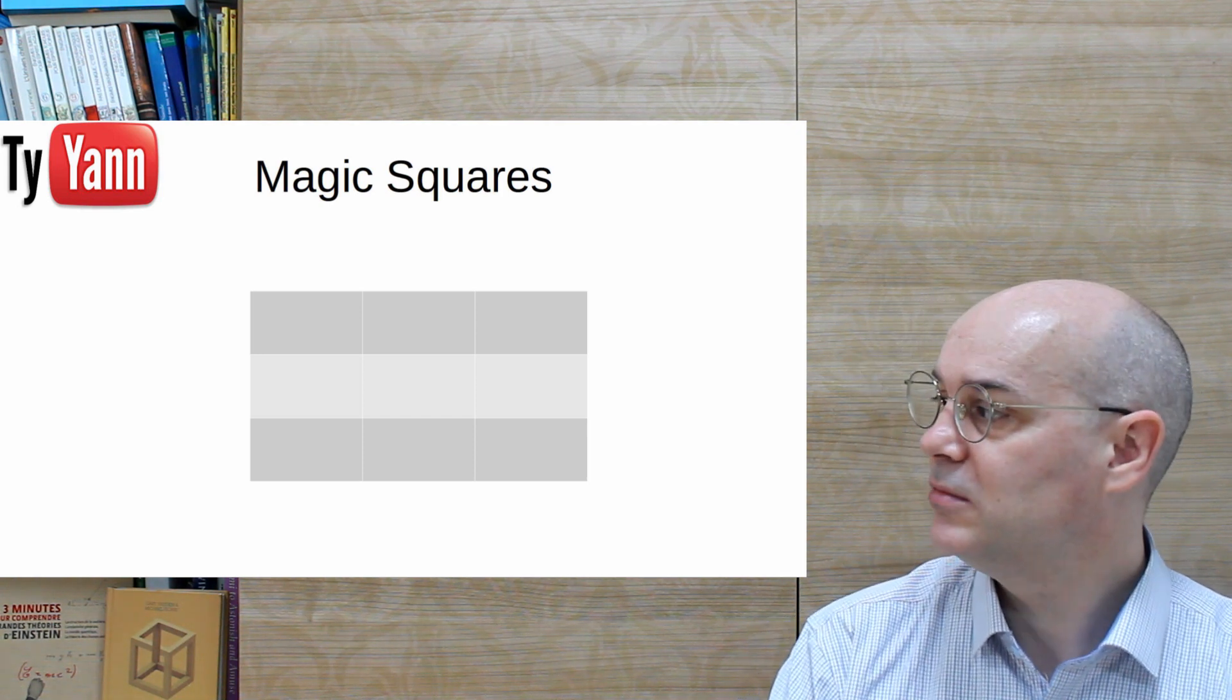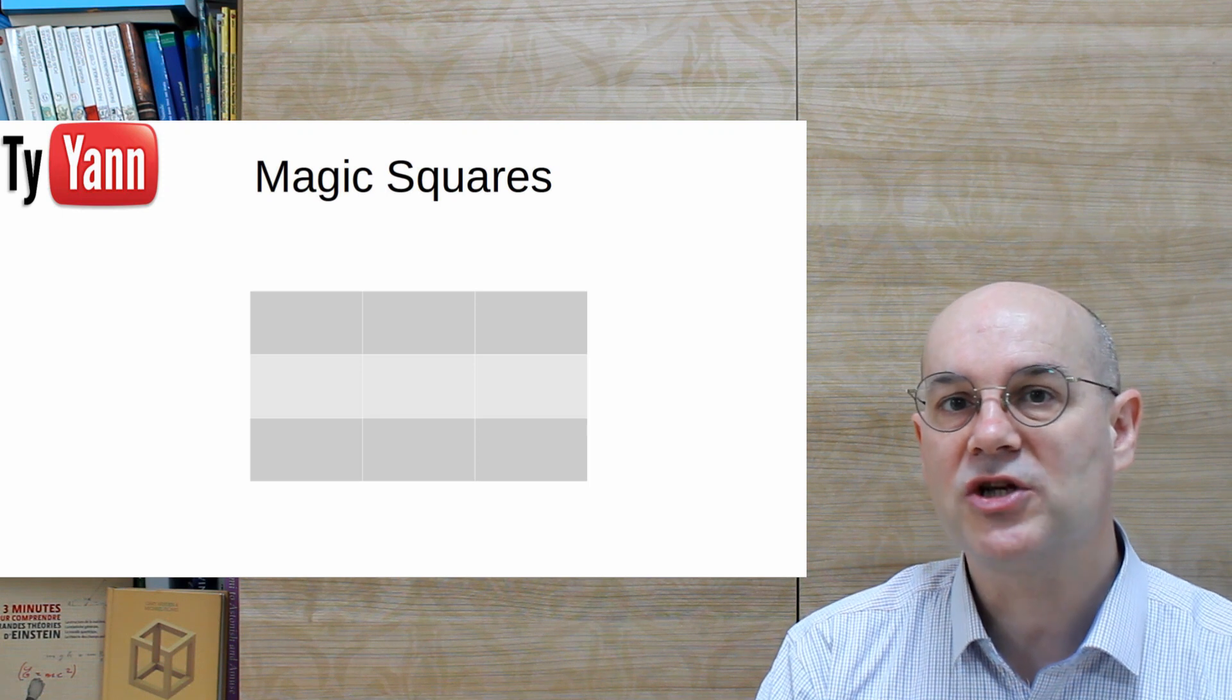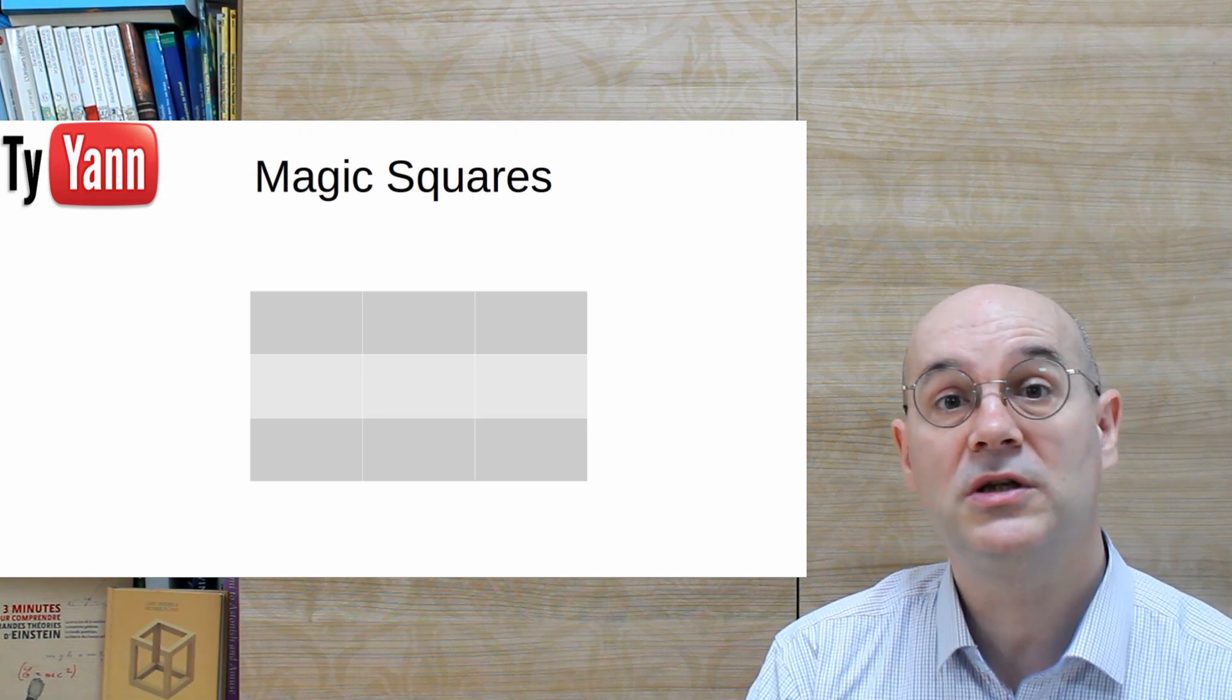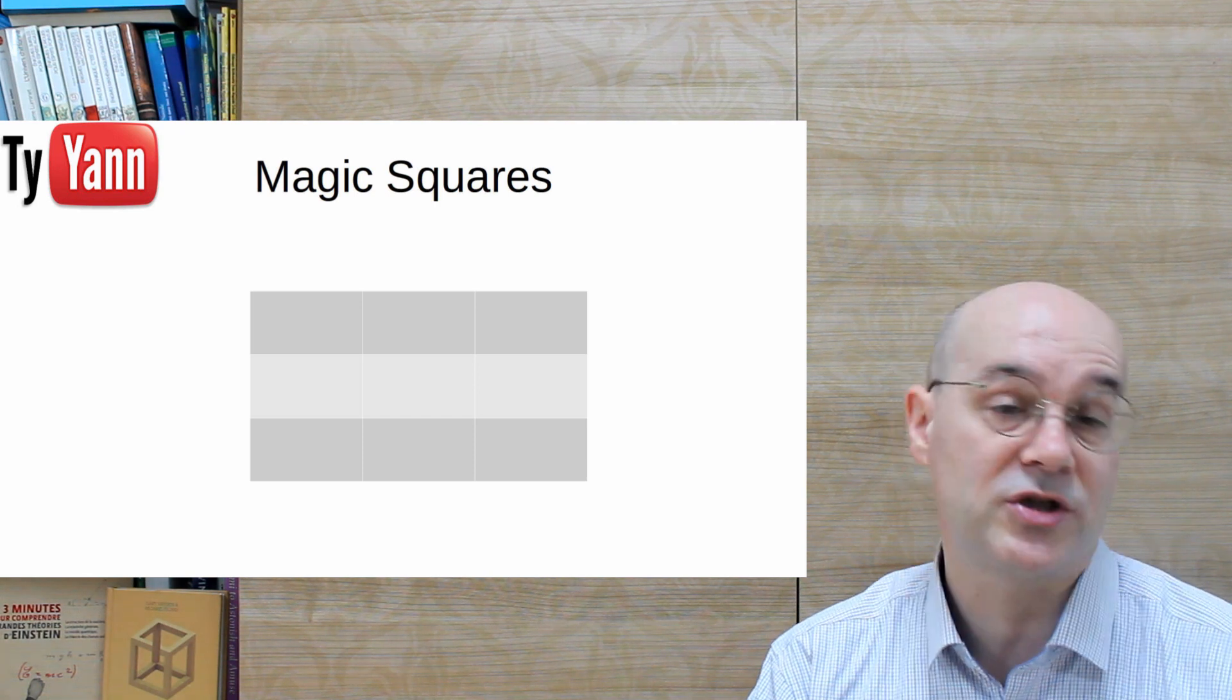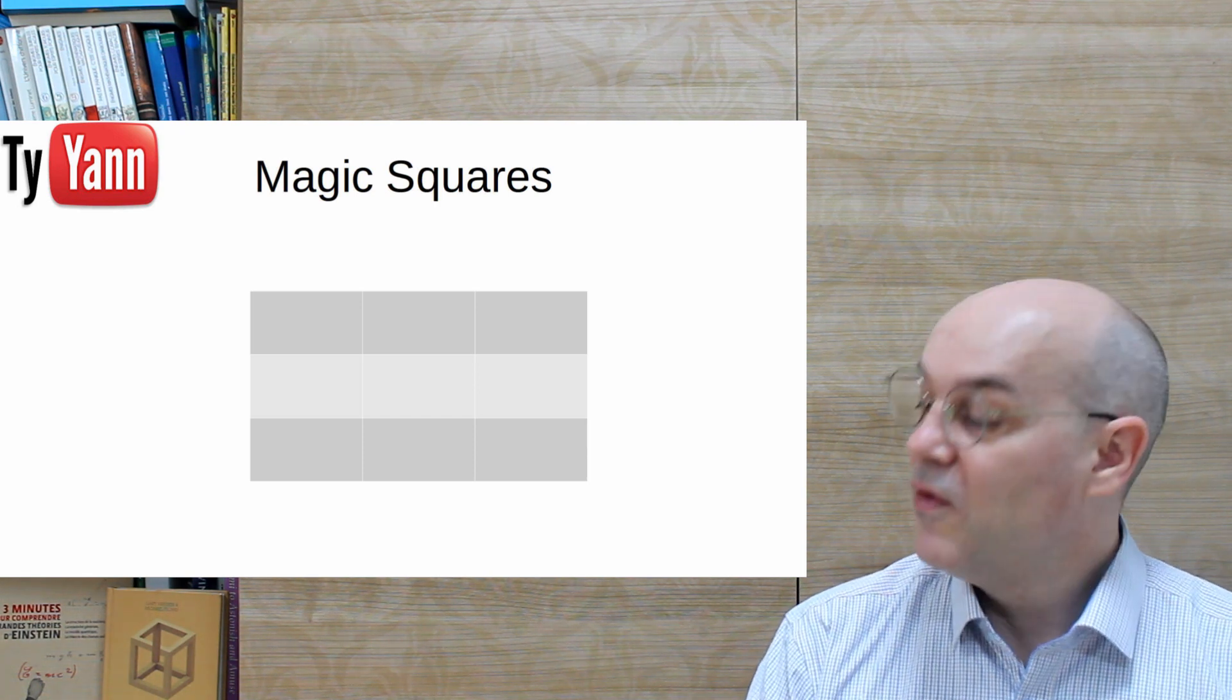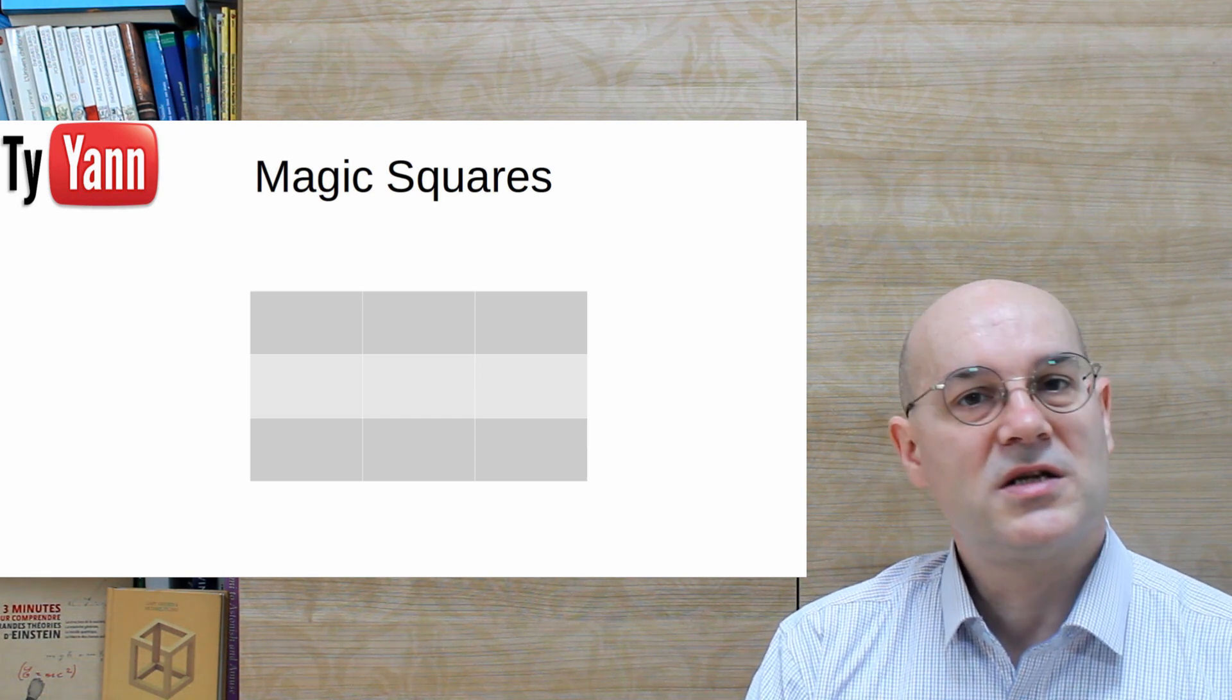It's not that easy actually, especially if you don't know the magic constant, the sum that you need to obtain from each row, each column, or each diagonal. Fortunately, I can give you the magic constant. It's 15.